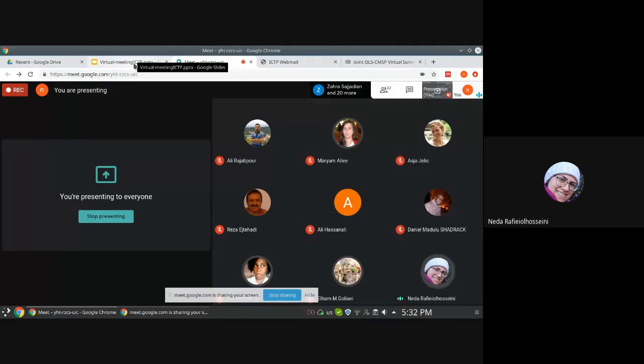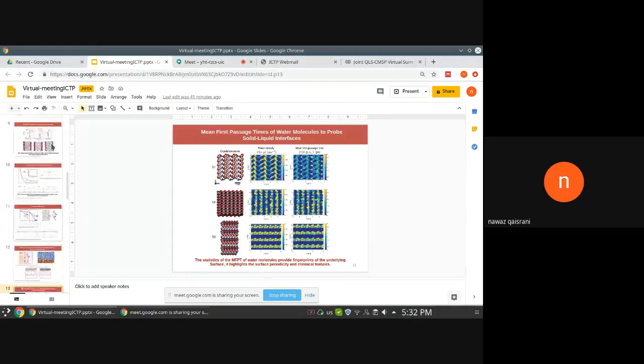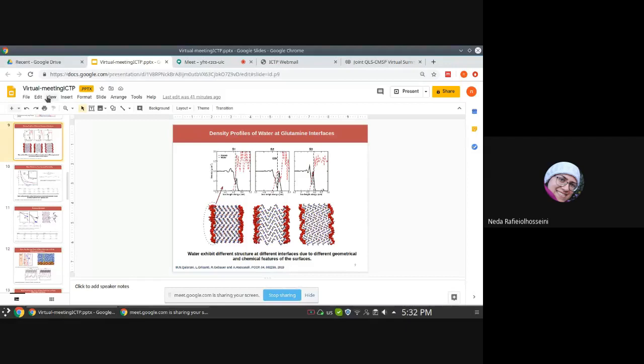A question is asked about slide nine showing pictures of water formation near three surfaces, asking what's the difference between the structures of these aggregations. The speaker responds that this shows water within 3.5 or 5 angstroms—it's a snapshot—but the actual density profile is above showing how water density changes as a function of z.